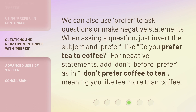We can also use 'prefer' to ask questions or make negative statements. When asking a question, just invert the subject and 'prefer,' like 'Do you prefer tea to coffee?' For negative statements, add 'don't' before 'prefer,' as in 'I don't prefer coffee to tea,' meaning you like tea more than coffee.